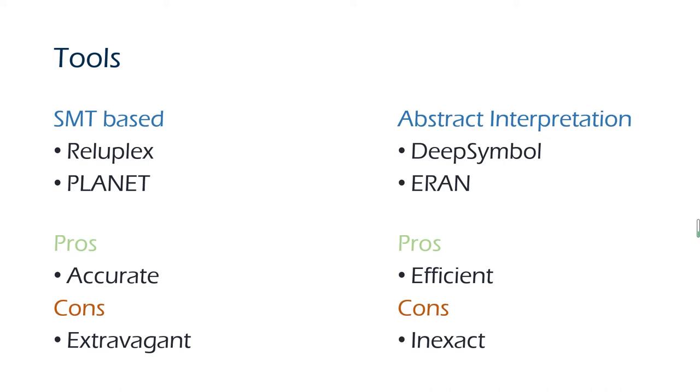ERAN comprises multiple abstract domains like DeepZono, DeepPoly, RefineZono, and RefinePoly. There is an obvious trade-off in efficiency and accuracy. Abstract interpretation methods can usually verify larger networks with relatively less precision.